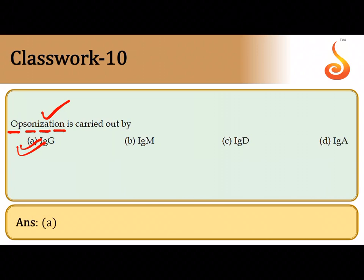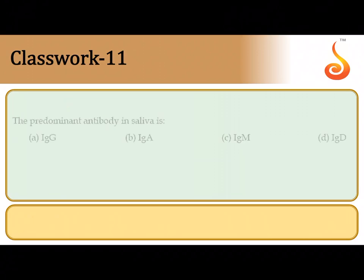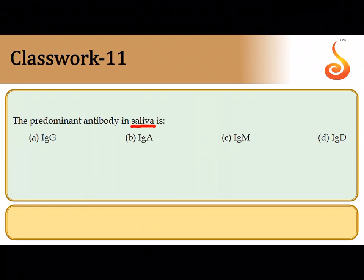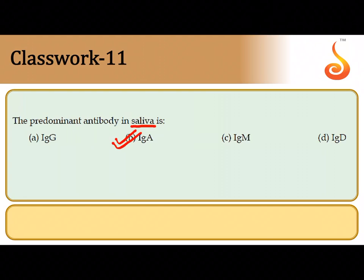The predominant antibody found in secretions is the secretory antibody IgA. It is also found in mother's milk as well as in the mucus secretions of the respiratory, digestive, and urogenital systems. So the predominant antibody found in secretions such as saliva is IgA.